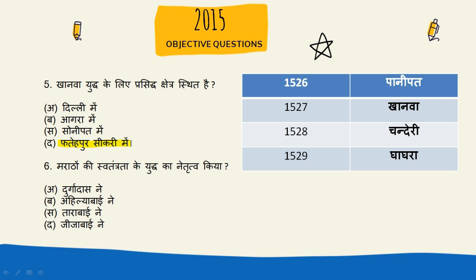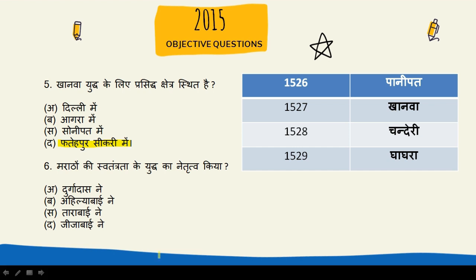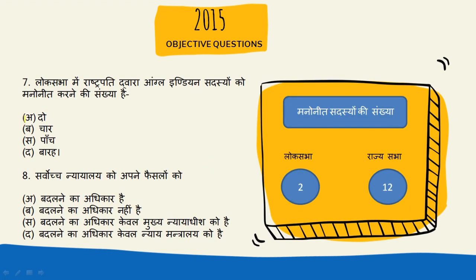Char yudh lade gaye jo ki the: pahla tha Panipat ka pratham yudh, Khanwa ka yudh, Chanderi ka yudh aur Ghaghra ka yudh. Aur ye lagatar salon mein lade gaye — 1526, 1527, 1528 aur 1529 mein. Aur Babur ke dwara lade gaye yudh ka ek trick: answer hai Tara Babai ne.